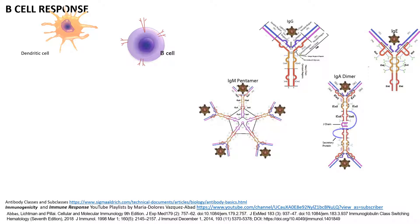A B cell response is characterized by the presence of antibodies, and these antibodies can be of different antibody classes or isotypes: IgM, IgG, IgA, or IgE.